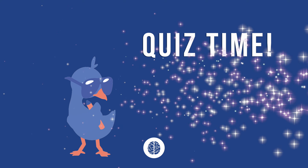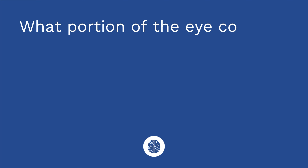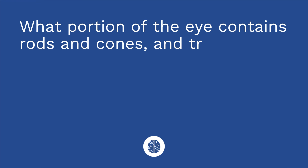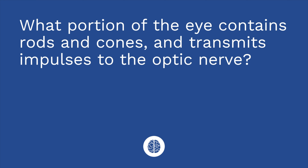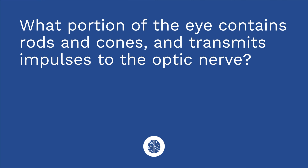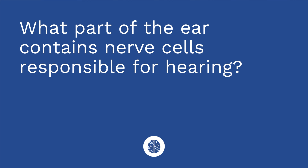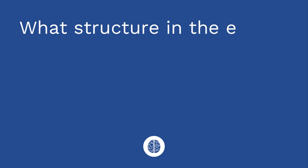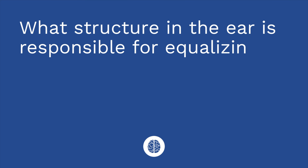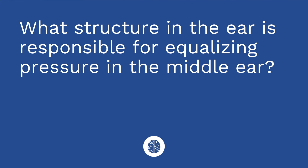You ready for your quiz? I have three questions for you. First question: What portion of the eye contains rods and cones and transmits impulses to the optic nerve? The answer is the retina. Question number two: What part of the ear contains nerve cells responsible for hearing? The answer is the cochlea. Question number three: What structure in the ear is responsible for equalizing pressure in the middle ear? The answer is the eustachian tube.